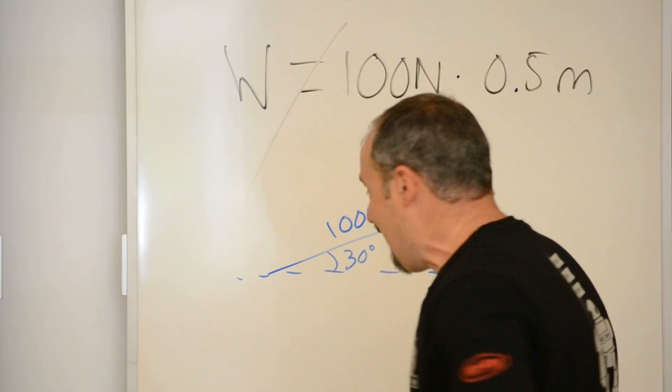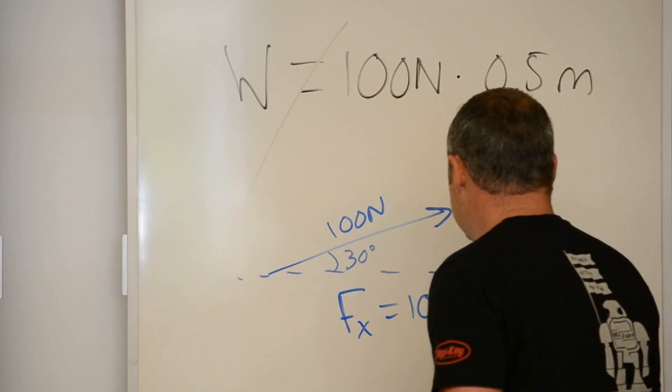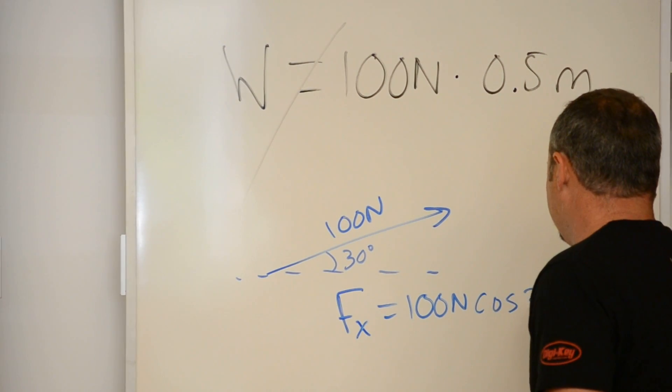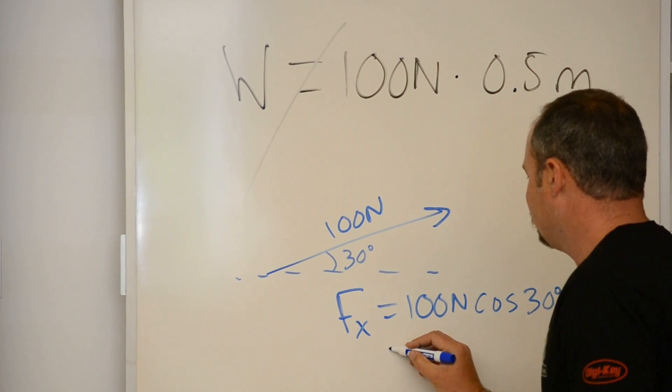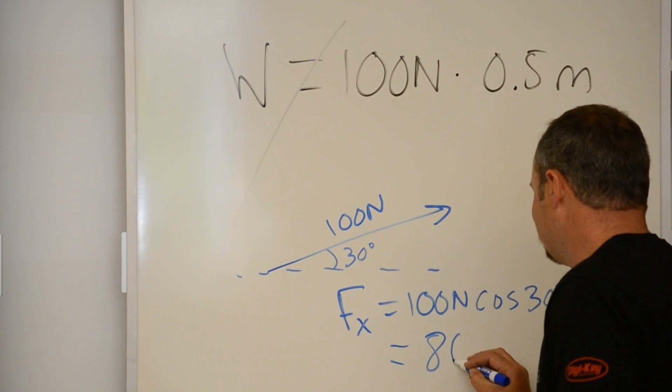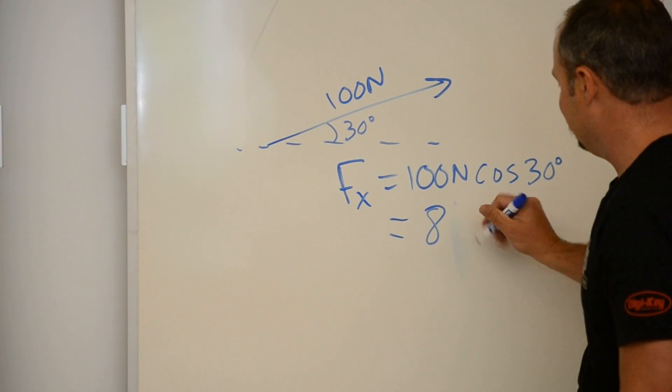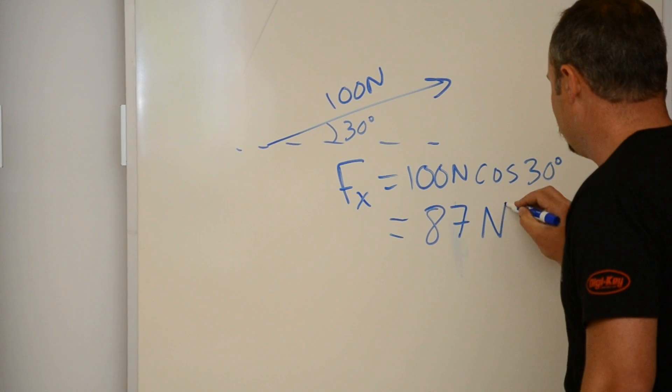So, my x component of force is 100 newtons times cosine 30 degrees and that's equal to 86. I believe 86.6, so let's just call it 87, 87 newtons.